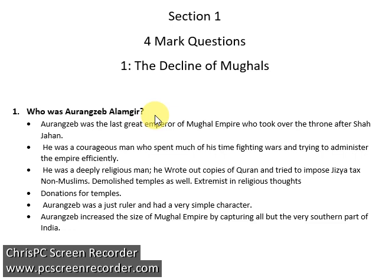So now, quickly, to start with this particular question: 'Who was Aurangzeb Alamgir?' This is a question that has come quite often in past papers, and the easiest way to answer it is to write about what kind of person he was — first, who he was, then what kind of person he was, and then to describe his policies. That will definitely get you full marks.